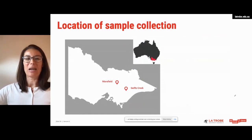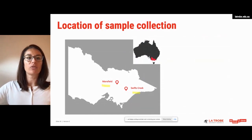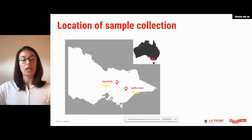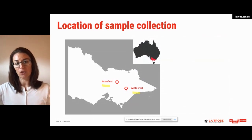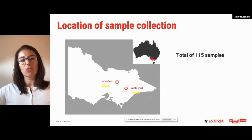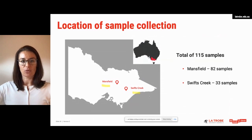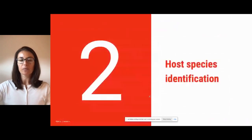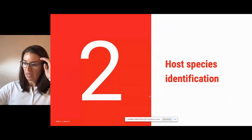The sample locations were in two different areas in rural Victoria: Mansfield and Swift's Creek, and again that's because those are the areas where attacks on livestock had been reported. Over a couple of days we managed to collect 115 samples — 82 samples from Mansfield and 33 samples from Swift's Creek.